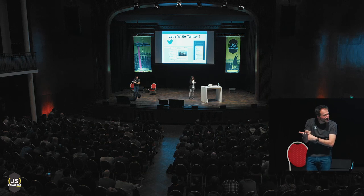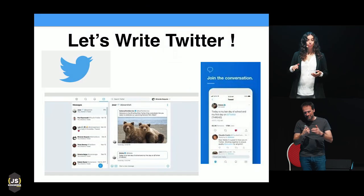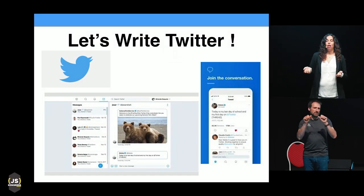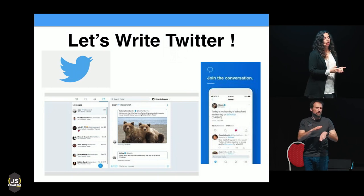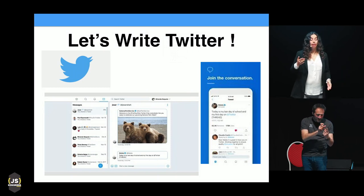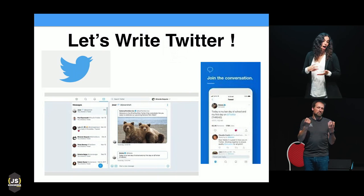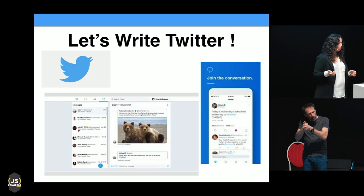I would probably need a user model with a username, first name, and last name. I would probably need a tweet model with a tweet ID, a text, and the user ID who tweeted. And talking about relational databases, I would probably need some kind of connection between a user and the user they follow — one column of user ID and one column of followee ID.